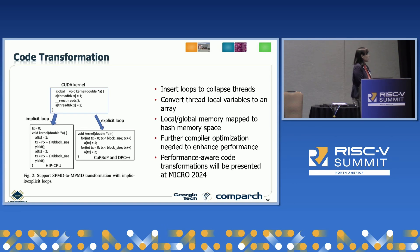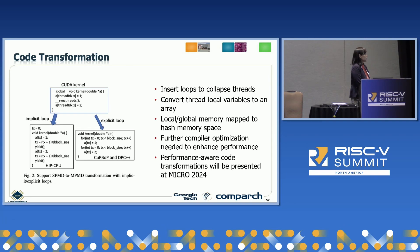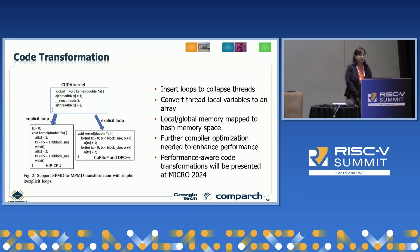Other compiler transformations are needed: we need to convert thread-local variables to arrays, and local/global memory spaces in CUDA need to be mapped to different memory spaces. Further compiler optimizations are needed to enhance performance. Our earlier work only showed coverage; an upcoming presentation will talk about performance and the transformations needed to support CUDA code running on different platforms.